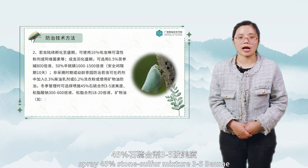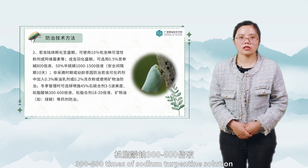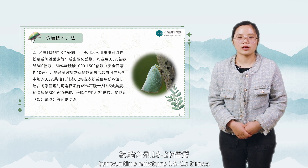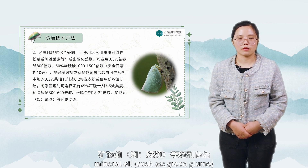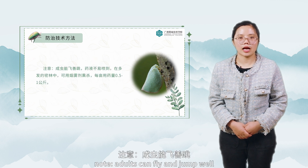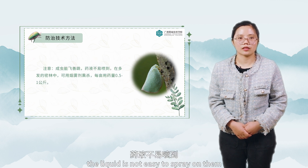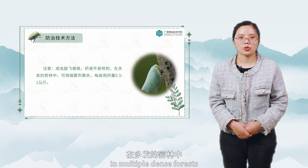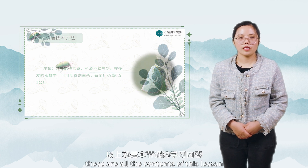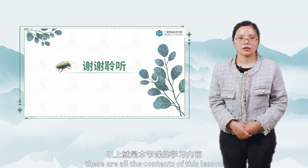In winter, spray 45% stone sulfur mixture 3 to 5 Baume, 300 to 600 times sodium turpentine solution, turpentine mixture 18 to 20 times, mineral oil such as green gloom, and other medicaments for control. Note: adults can fly and jump well, so the liquid is not easy to spray on them. In multiple dense forest areas, smoke can be used to kill them at 0.5 to 1 kilogram per mu. These are all the contents of this lesson. Thank you for listening.